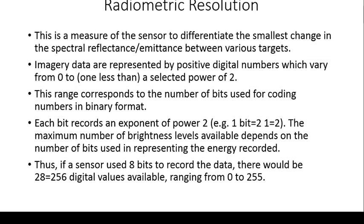Imagery data are represented by positive digital numbers varying from 0 to a selected power of 2. Each bit records an exponent of power 2. If we have 2 raised to the power 1, we have a digital number of 2. The maximum number of brightness levels available depends on the number of bits. If the sensor has 8 bits to record, we get 2 raised to 8, that is 256 as a digital value, varying from 0 to 255. A digital number of 0 means the image is completely white, and a digital number of 255 represents a very dark tone.